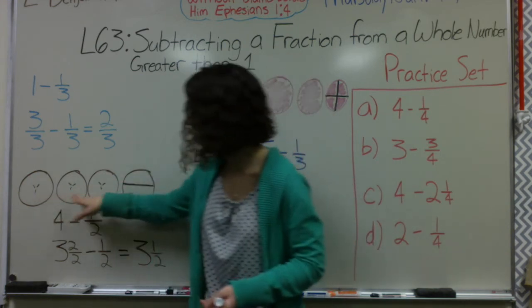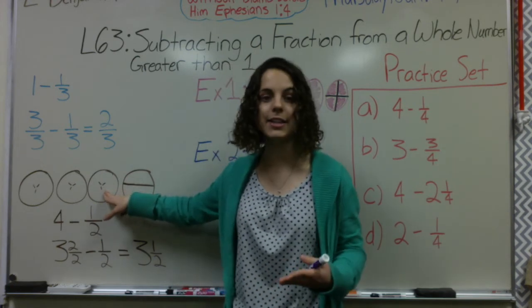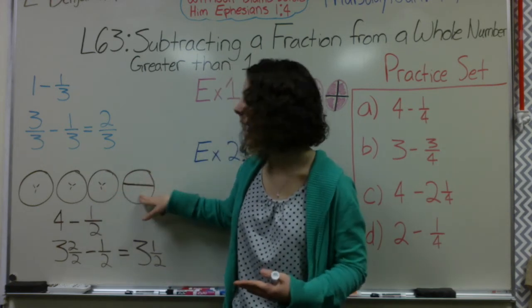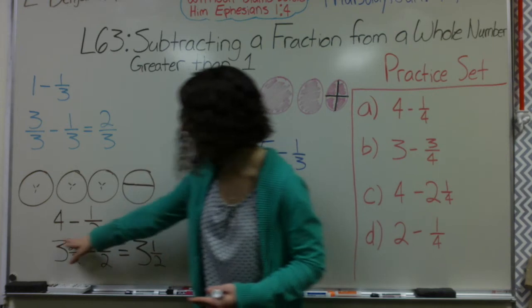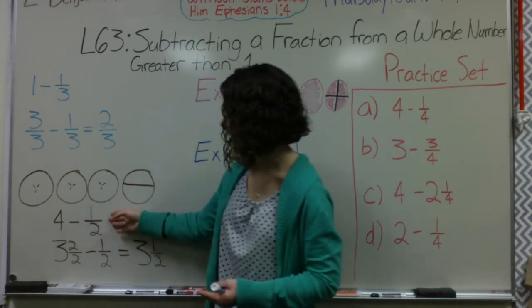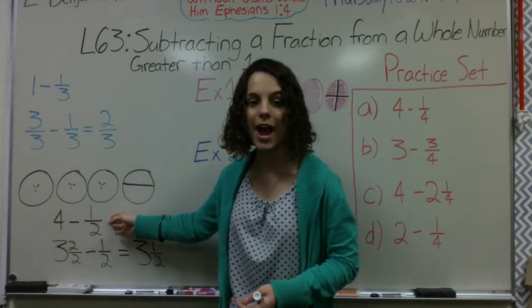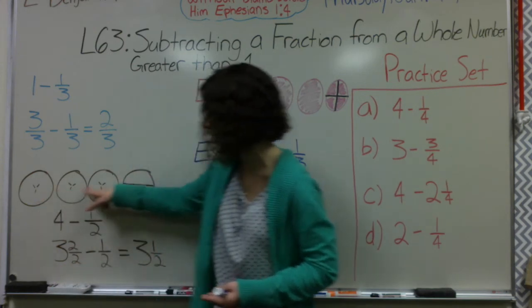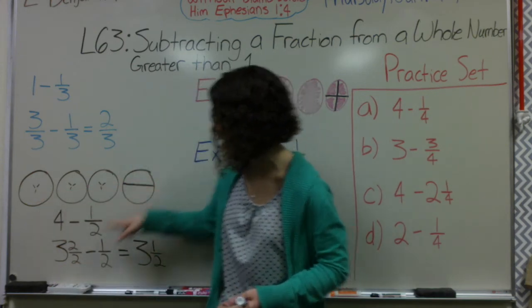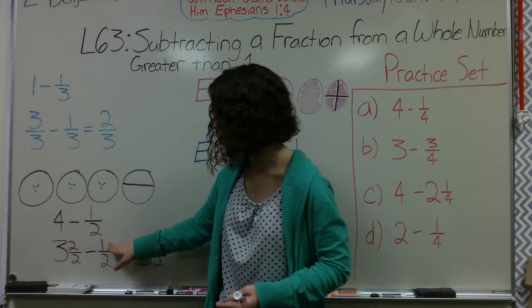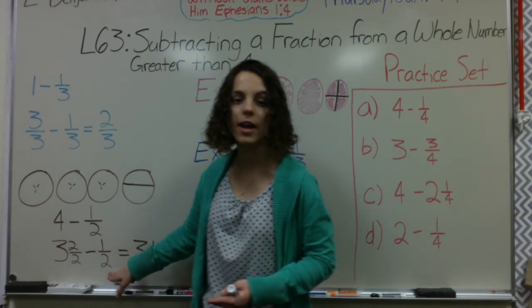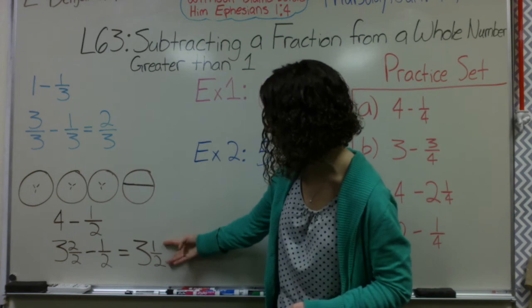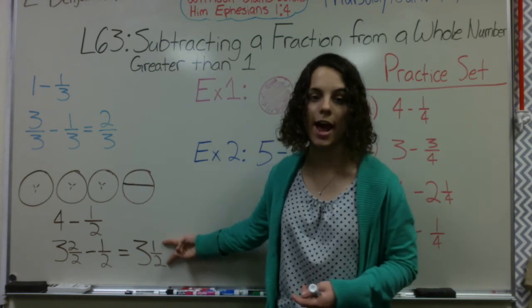I have my 3 whole pies that are uncut and then I have 2 halves. So then it looks like this written out as a number sentence. 4 minus half then looks like 3 and 2 halves just like here. Then I can subtract 1 half of the pie. And then my remainder or what I am left with, the difference, is 3 and a half.